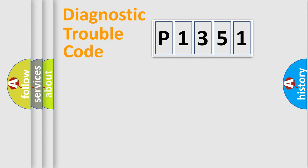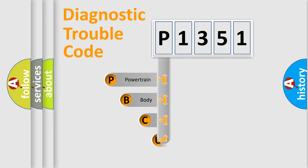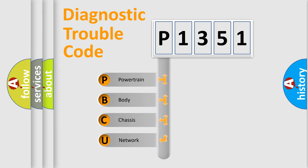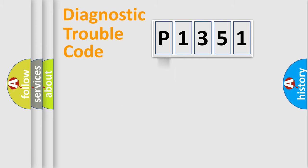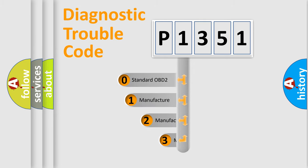Let's do this. First, let's look at the history of diagnostic fault code composition according to the OBD2 protocol, which is unified for all automakers since 2000. We divide the electric system of the automobile into four basic units: Powertrain, Body, Chassis, and Network. This distribution is defined in the first character of the code.